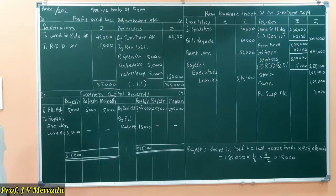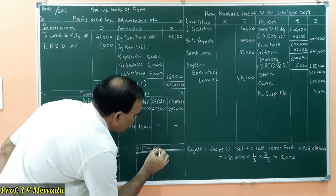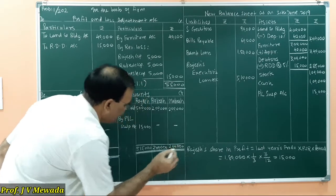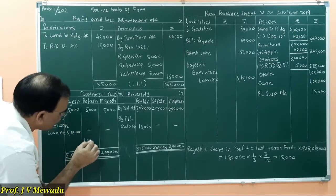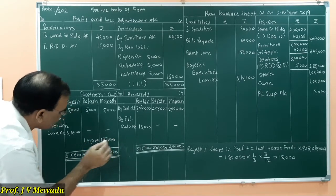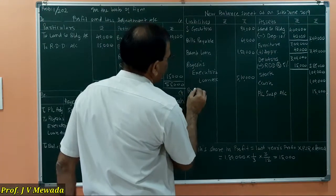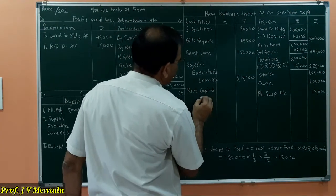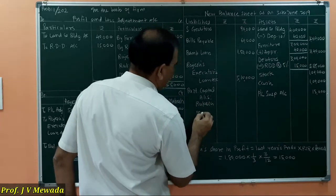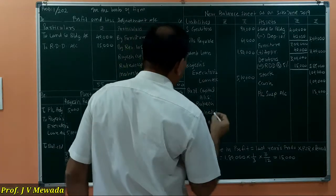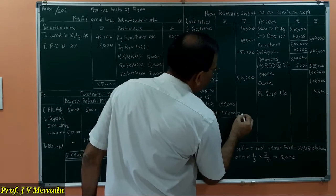For the two other partners, the balance is 2 lakh total for each. The balance carried down is 1,95,000 each. In the balance sheet we write Partners' Capital Accounts for Rakesh and Mahesh: 1,95,000 each, so the total is 3,90,000.